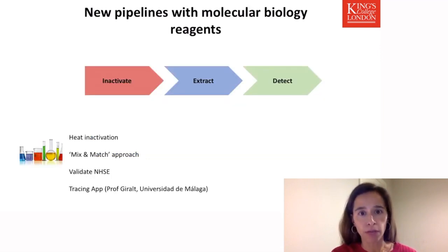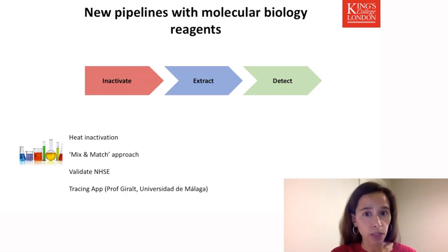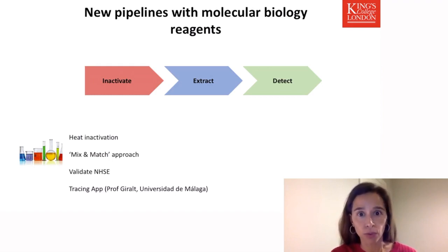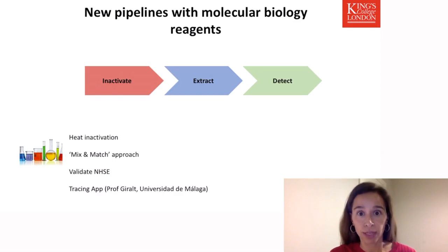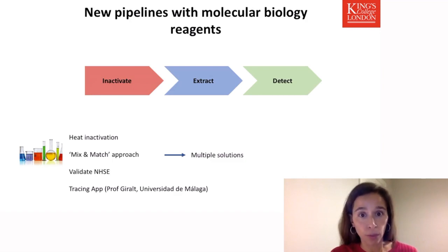Here is a simplified flowchart of how SARS-CoV-2 is diagnosed. We first need to inactivate the virus because the samples are potentially infectious. We then need to extract the genetic material of the virus, which we then detect. What we have been developing in the June Almeida Lab are protocols for heat inactivation. We have been using a mix-and-match approach, which allows us to mix different reagents usually used in molecular biology rather than clinical diagnostics, validating through NHS England. We have also been incorporating a tracing app for our samples, in collaboration with Professor Girald at the University of Malaga, to provide multiple solutions and avoid running out of reagents, building resilience.